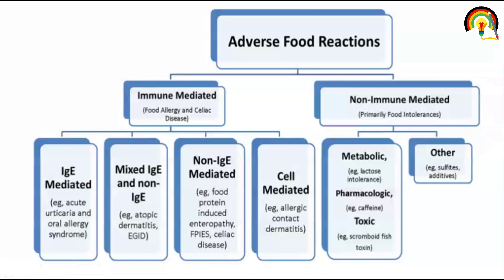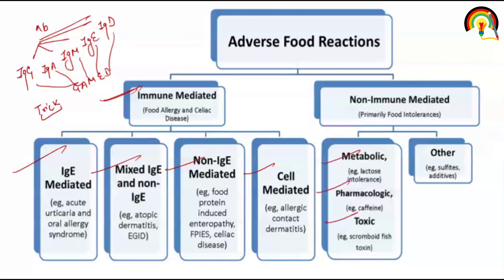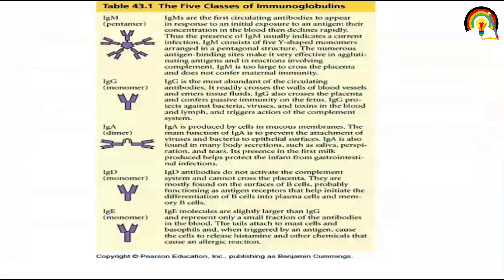Adverse food reactions do tarike ke hain — immune-mediated aur non-immune-mediated. Jab bhi aap koi food lete ho jo body mein adverse effect create karta hai, immune system IgE, mixed IgE, non-IgE mediated ya cell-mediated response create karta hai. 5 tarike ke immunoglobulin hote hain — IgG, IgA, IgM, IgE, aur IgD — jisko hum GAMED trick se yaad kar sakte hain. Non-immune-mediated ke andar metabolic, pharmacologic aur toxic reactions aate hain.